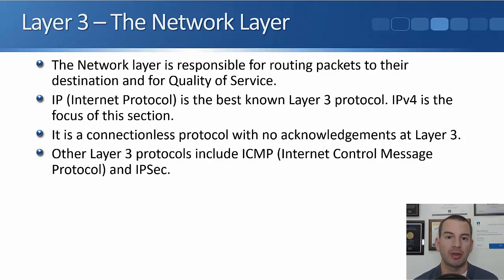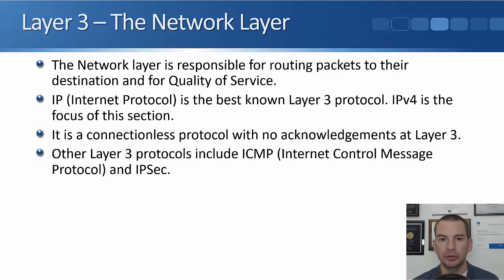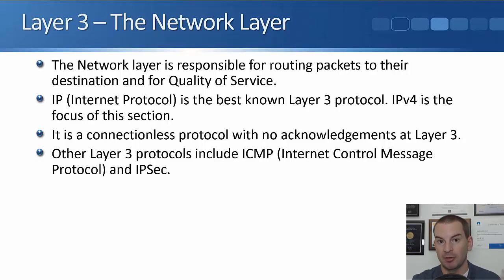IP — Internet Protocol — is the best known layer 3 protocol. IPv4 is the focus of this section. There is also IPv6, which is the upgrade for IPv4. Later in the course we'll talk about why we have IPv6 and how to configure it. IPv6 is a connectionless protocol, so there are no acknowledgements at layer 3. You can still have reliable traffic by using TCP and its acknowledgements at layer 4, or by having it built into the upper layers. Other layer 3 protocols include ICMP — the Internet Control Message Protocol — used for ping and troubleshooting, and also IPSec for secure encrypted communications.